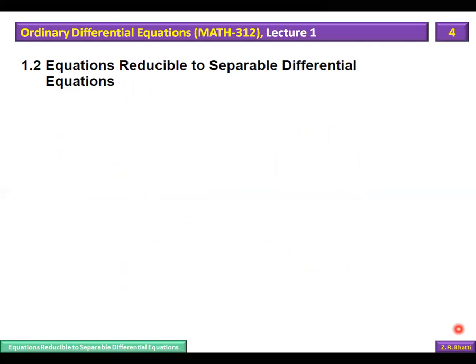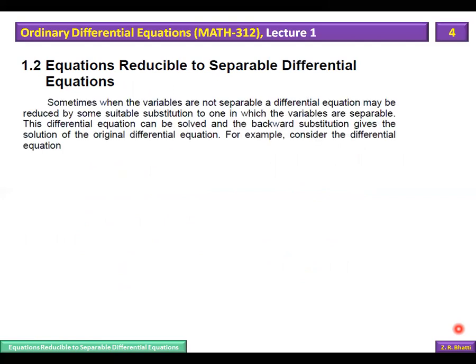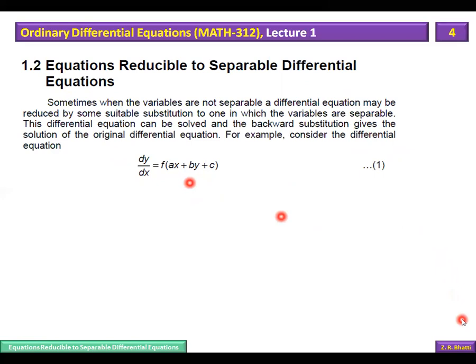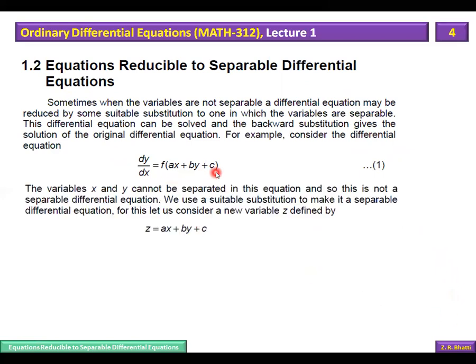The next topic is differential equations that are apparently not separable — their variables cannot be separated directly. However, with a certain substitution, the variables can be separated. These are called reducible to separable equations. Their form is dy/dx = f(ax + by + c). Here x and y appear combined, so variables cannot be directly separated. We substitute z = ax + by + c.